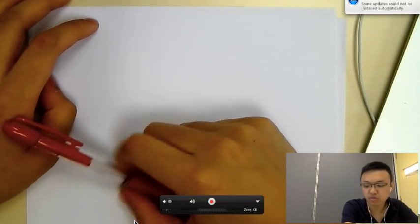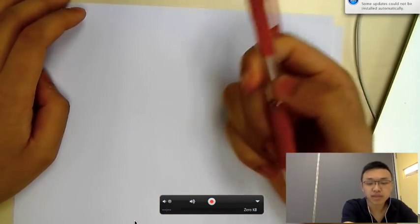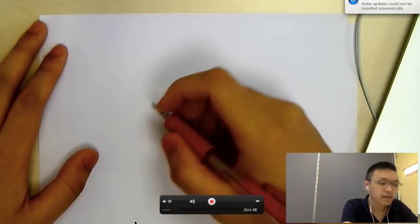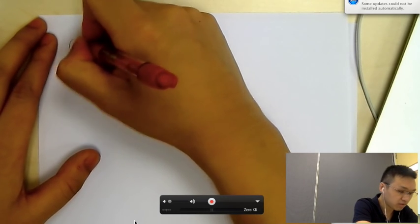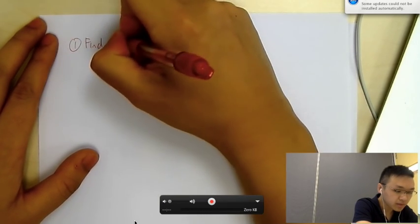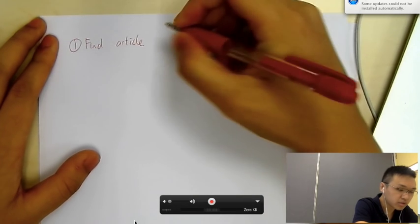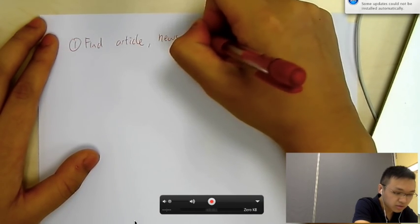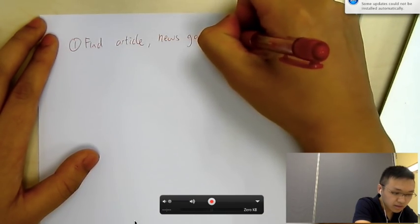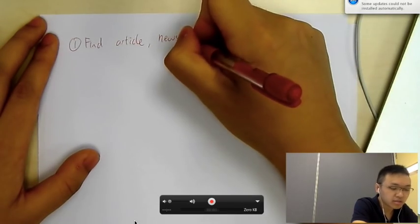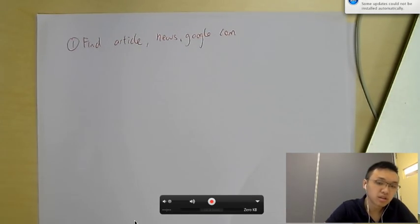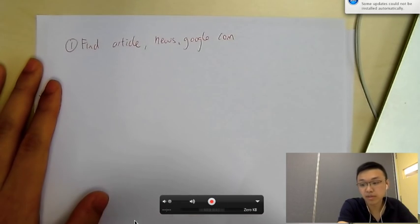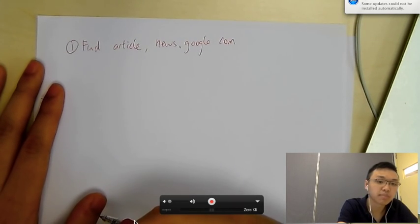So, let's start off with how to write a level 7 development IA. So, first of all, the first thing is finding the right article. I always recommend people to, when you find an article, go to this website, news.google.com. And then, because of development, there are multiple topics you could do.